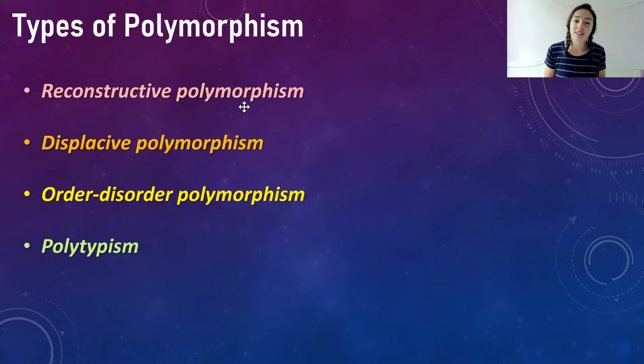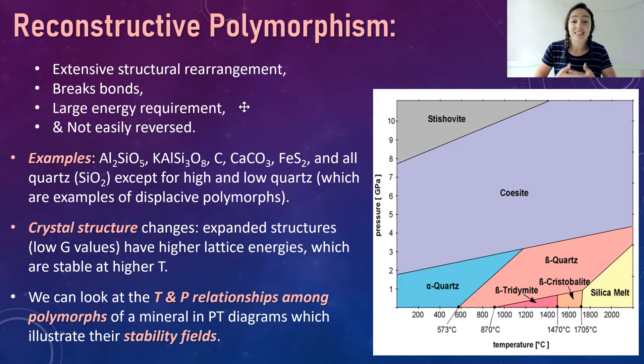There are four main types of polymorphism: reconstructive polymorphism, displacive polymorphism, order-disorder polymorphism, and polytypism. Reconstructive polymorphism involves extensive structural rearrangement, the breakage of bonds, a large amount of energy, and it's not easily reversed. This is probably the most extensive change in terms of polymorphism types, and many common minerals that exhibit polymorphism fall under this category.